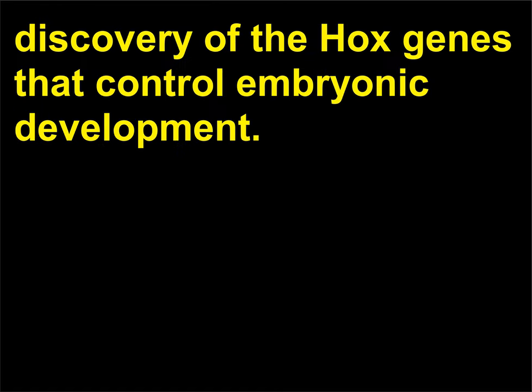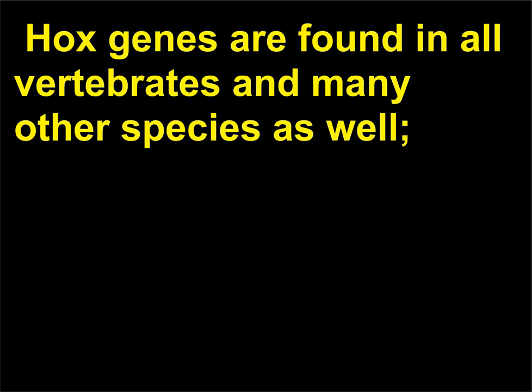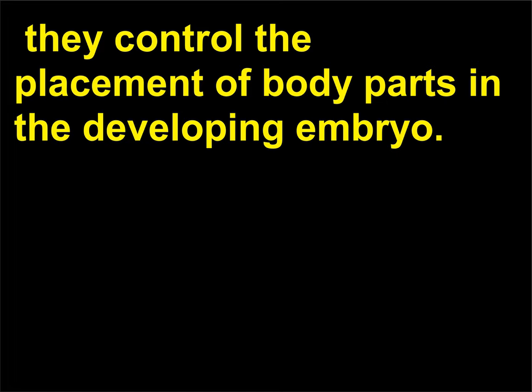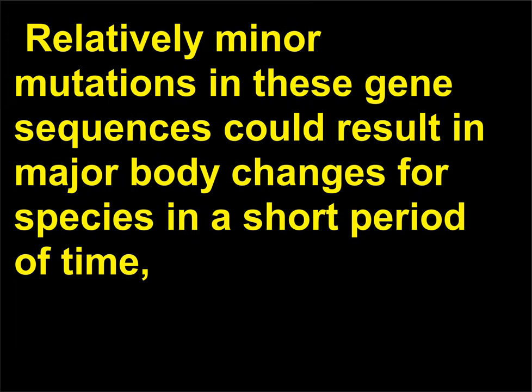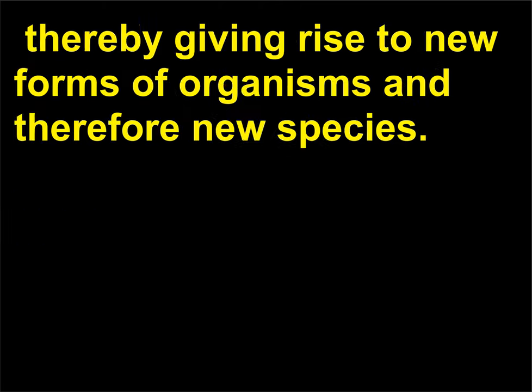Gould and Eldridge's work has been buttressed by the discovery of the Hox genes that control embryonic development. Hox genes are found in all vertebrates and many other species as well. They control the placement of body parts in the developing embryo. Relatively minor mutations in these gene sequences could result in major body changes for species in a short period of time, thereby giving rise to new forms of organisms and therefore new species.